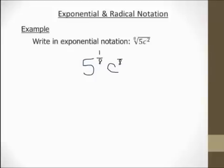And on top is their exponents. So 5, the exponent on the 5 is a 1. The exponent on the C is a 2. I can't reduce 1 8th, but I can reduce 2 8ths. So I have 5 to the 1 8th power and C to the 1 4th power. And that's my final answer.